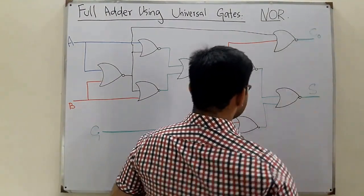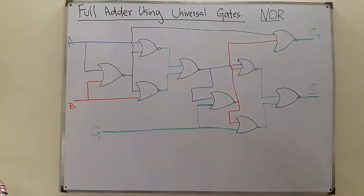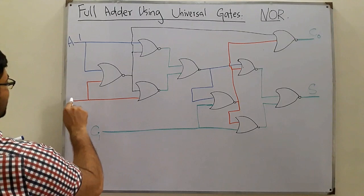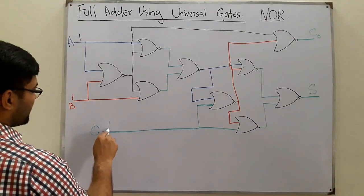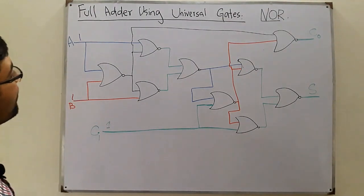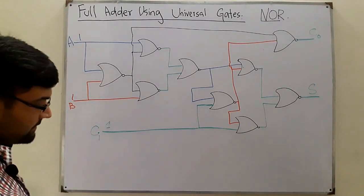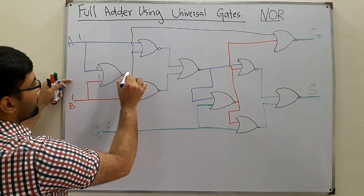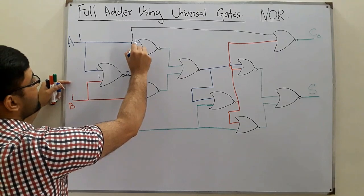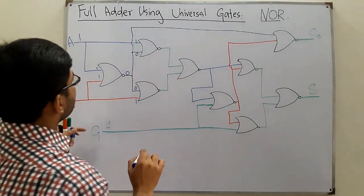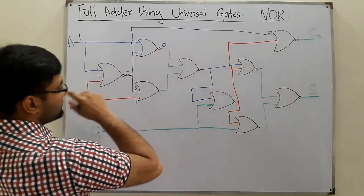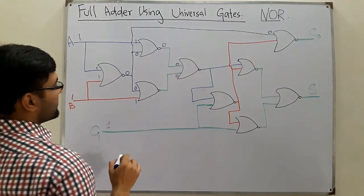We prove whether this NOR circuit is acting correctly. Let C_in be the input carry and C_out the output carry. Again we test with A=1, B=1, C=1 — both carry and sum should be 1. 1 NOR 1 is 0, and 1 NOR 0 is 0. So we have 0 here and 0 here. Then 1 with 0 is also 0, and 1 with 0 is 0 again.